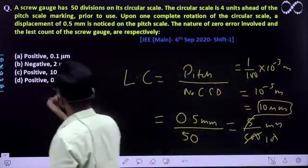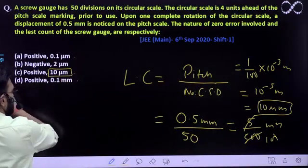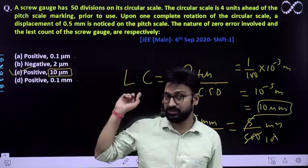So ab dekhlo, positive options to 3 aa rahe thay na, to isme se answer jo aya, least count 10 micrometers bhi aa raha hai. So C would be your correct option. I hope this thing is clear to you, this question is clear to everyone.